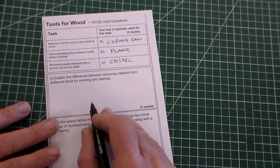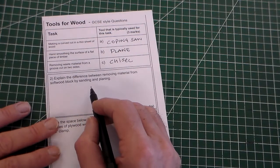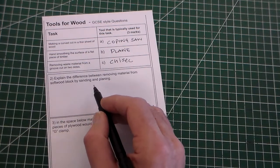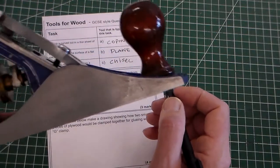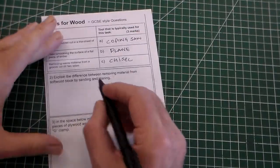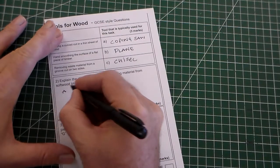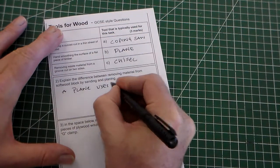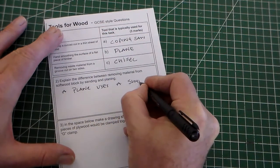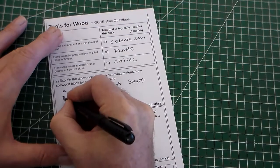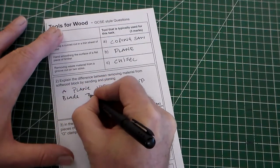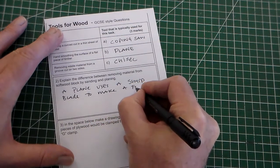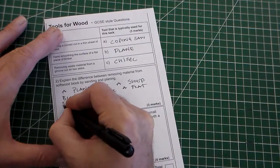Explain the difference between removing material from a soft wood block by sanding and planing. So obviously planing, we'd use the plane. Push it along so we can say a plane uses a sharp blade to make a flat surface.